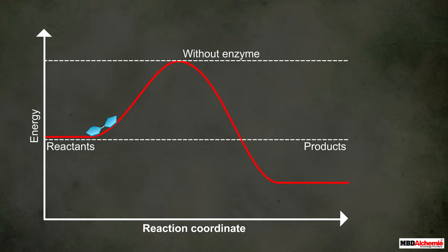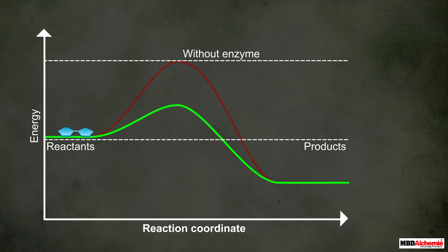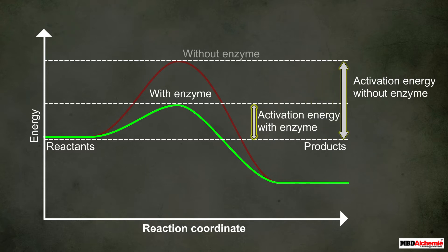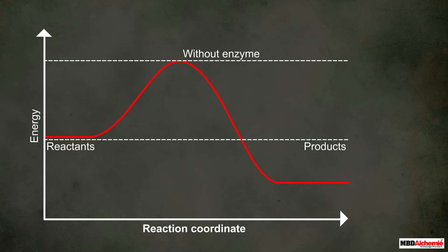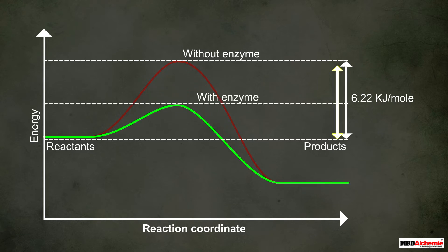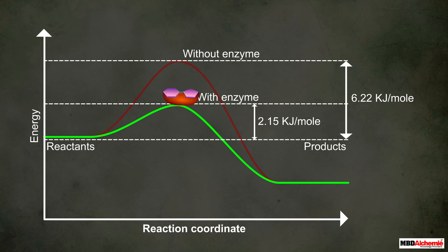Now let us learn how enzymes catalyze a biochemical reaction. A biochemical reaction occurs very slowly in the absence of an enzyme, while in the presence of an enzyme the reaction occurs quickly. This is because enzymes reduce the magnitude of activation energy of the reactions. For example, in acid hydrolysis of sucrose, in the absence of any enzyme the activation energy is 6.22 kilojoules per mole, but in the presence of an enzyme it reduces to 2.15 kilojoules per mole, making the reaction occur much faster.